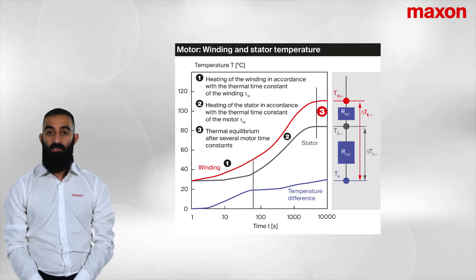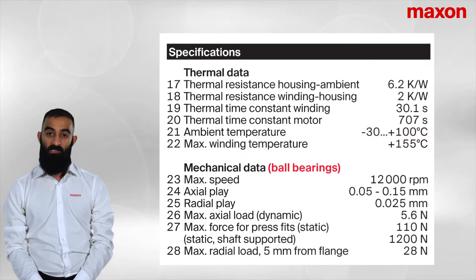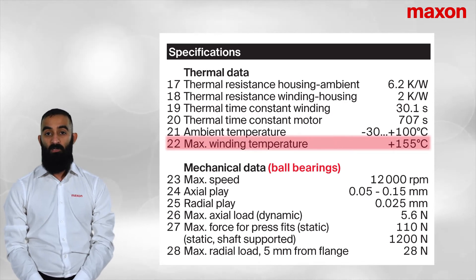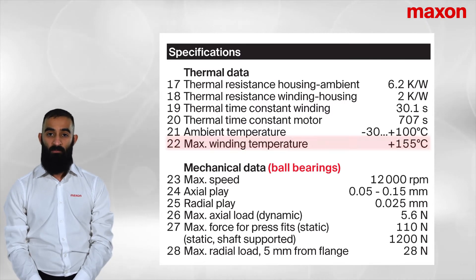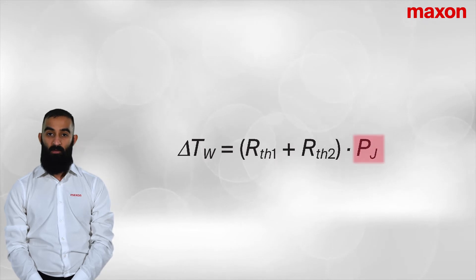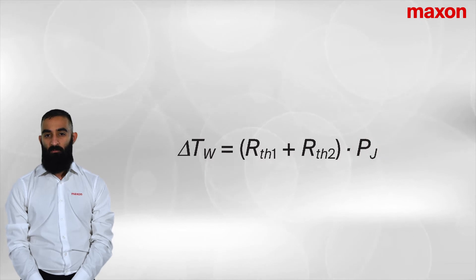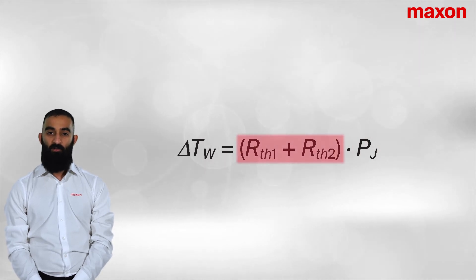This temperature rise is of importance to engineers, as it relates to line 22 of Maxon motor datasheets — the maximum winding temperature. At this temperature, the motor is subject to its maximum continuous torque and hence its maximum continuous current. The temperature increase in the winding is governed by the following equation. As you can see, a proportional relationship exists with the joule power losses in the winding, but there are two other variables introduced.